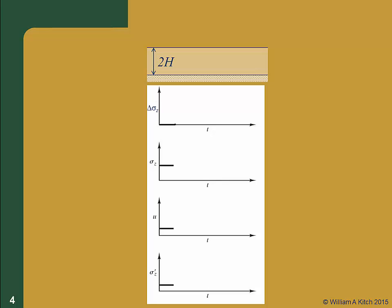Here's a graphical picture of the consolidation process. We'll consider a saturated compressible soil layer with a thickness 2h, and we'll track the changes in applied vertical stress, total vertical stress, pore pressure, and effective vertical stress, all as a function of time. Before any construction, the total stress, pore pressure, and effective stress are all at their initial values, and there's no applied stress delta sigma z. We then construct a wide fill on top of our compressible soil. During fill placement, the applied vertical stress increases, and both the total stress and pore pressure increase by the same amount. This is because the soil has a finite hydraulic conductivity, and the fill placement is fast compared to the soil's ability to drain. Therefore the loading is essentially undrained, and there's no change in effective stress.